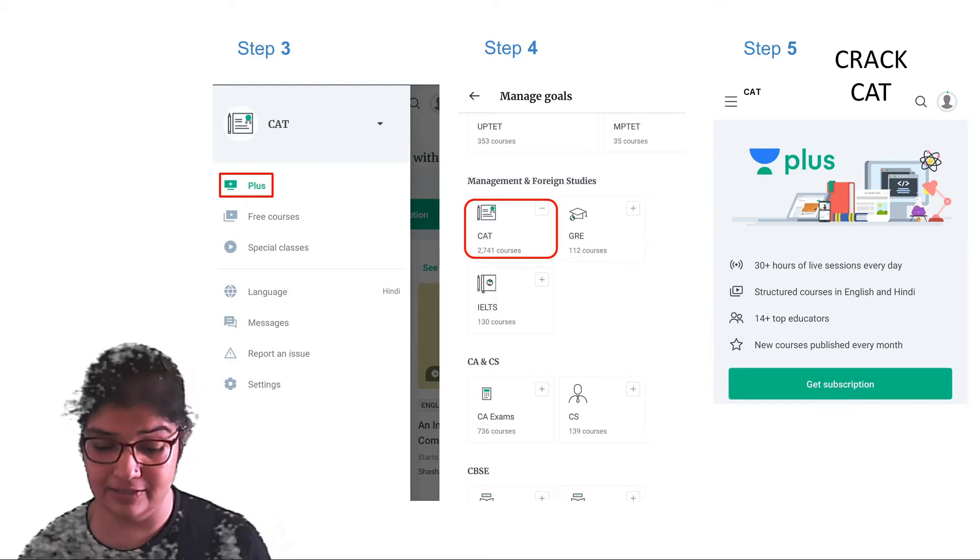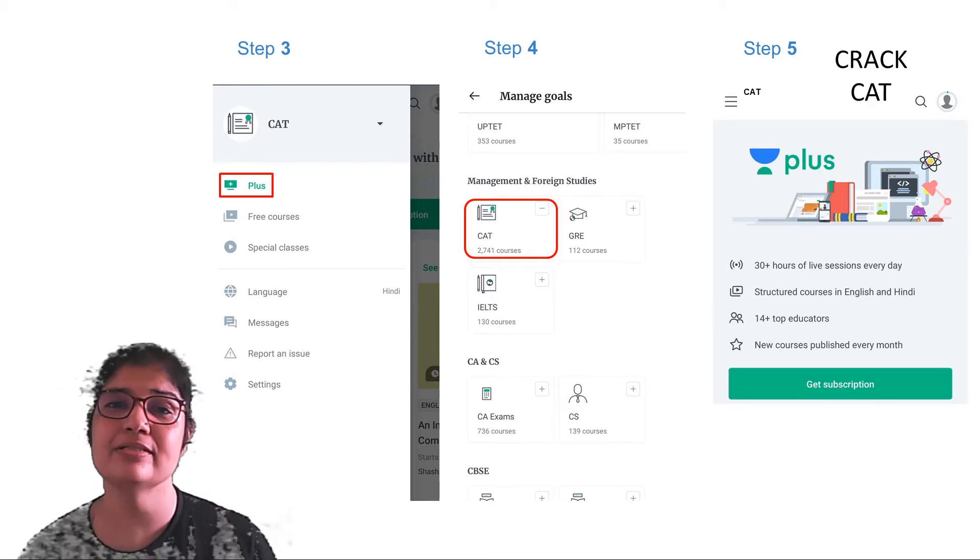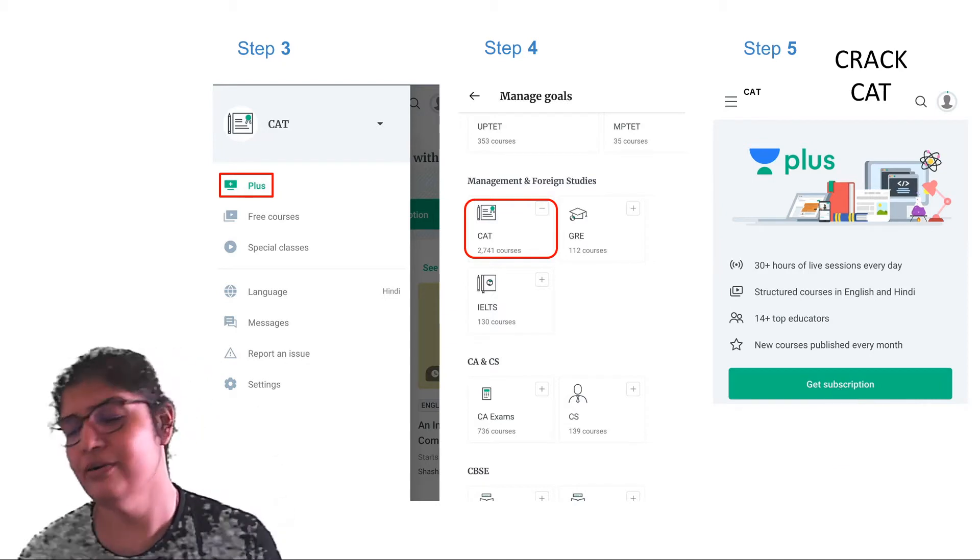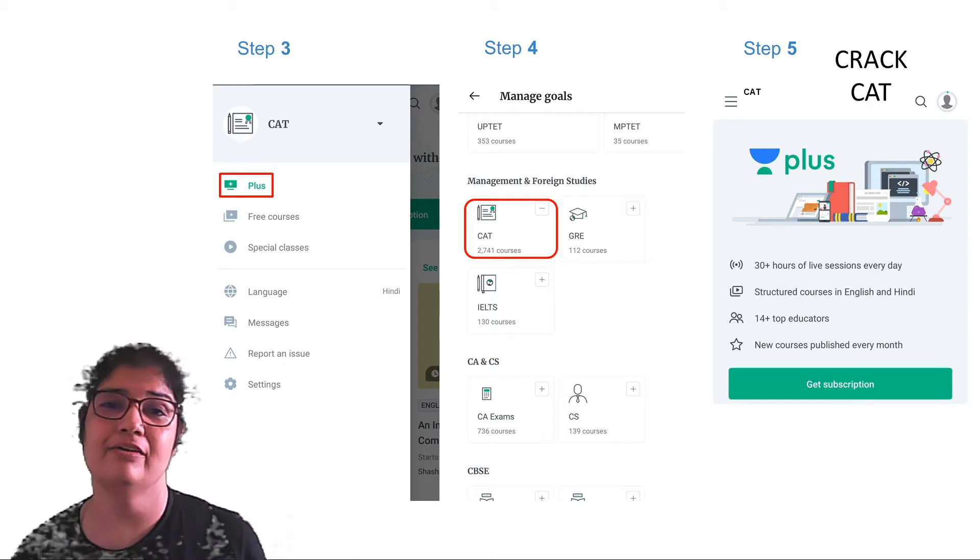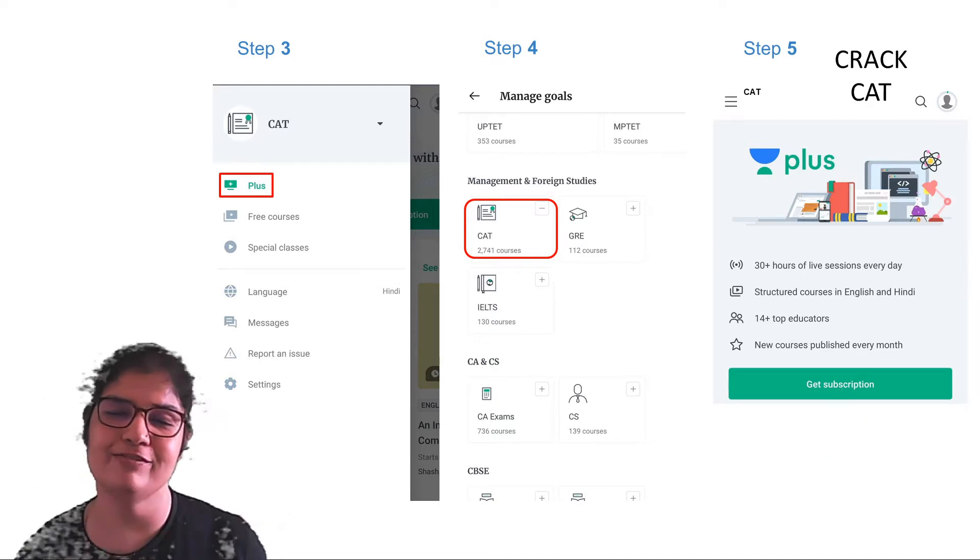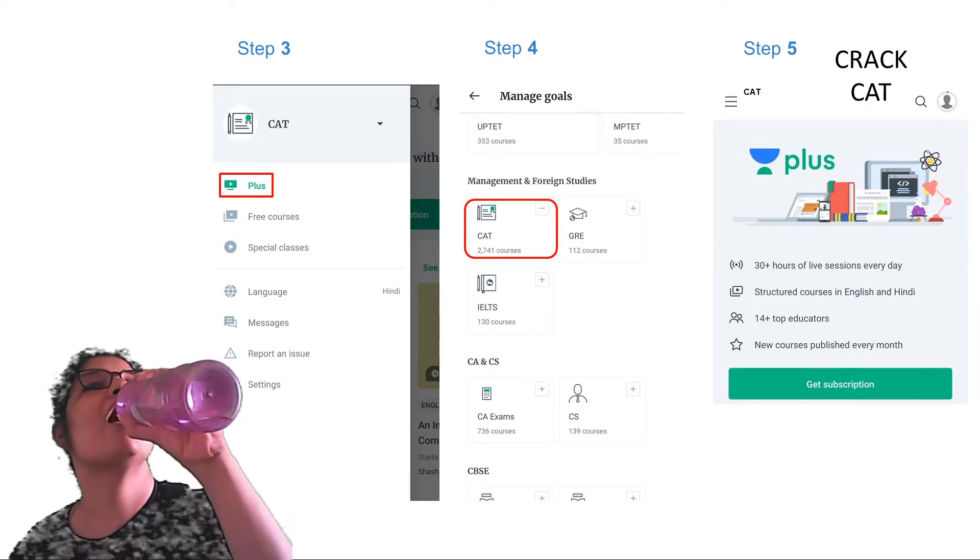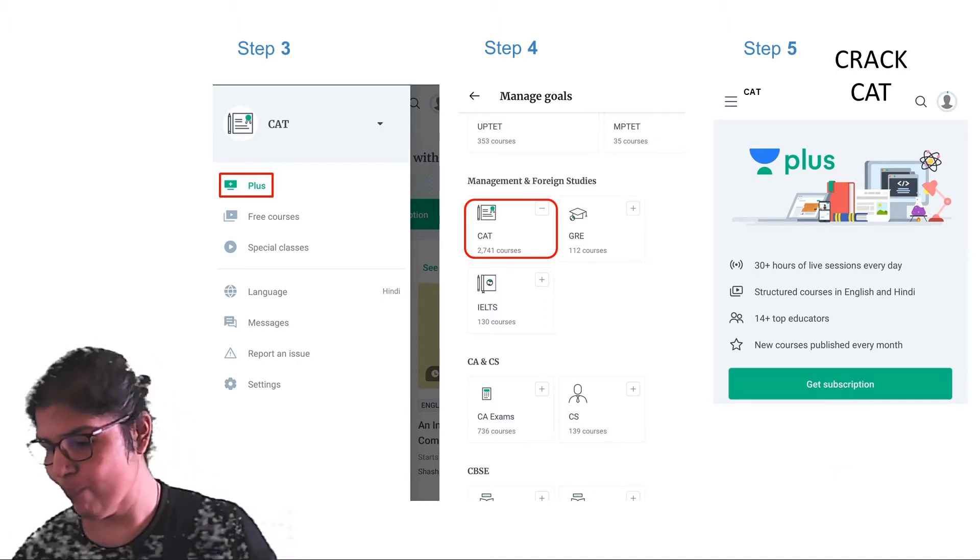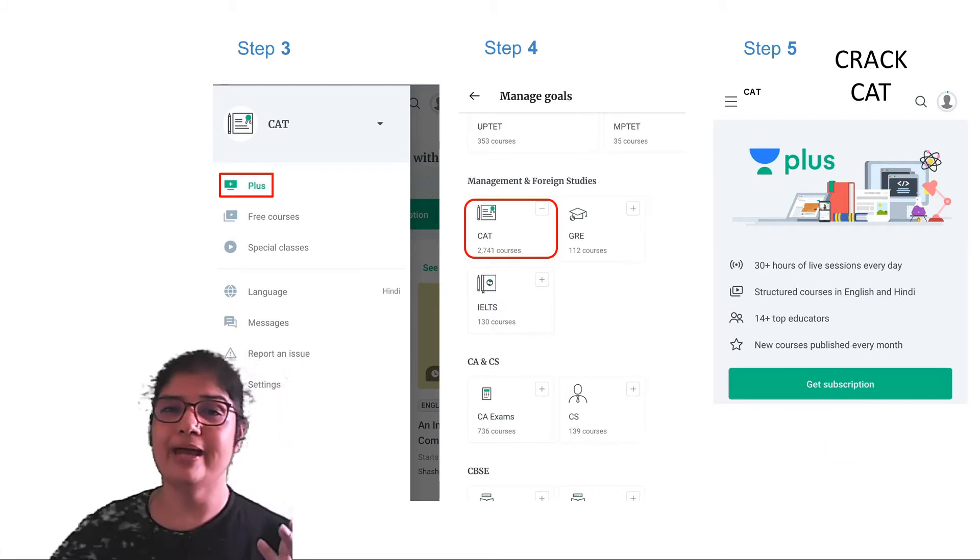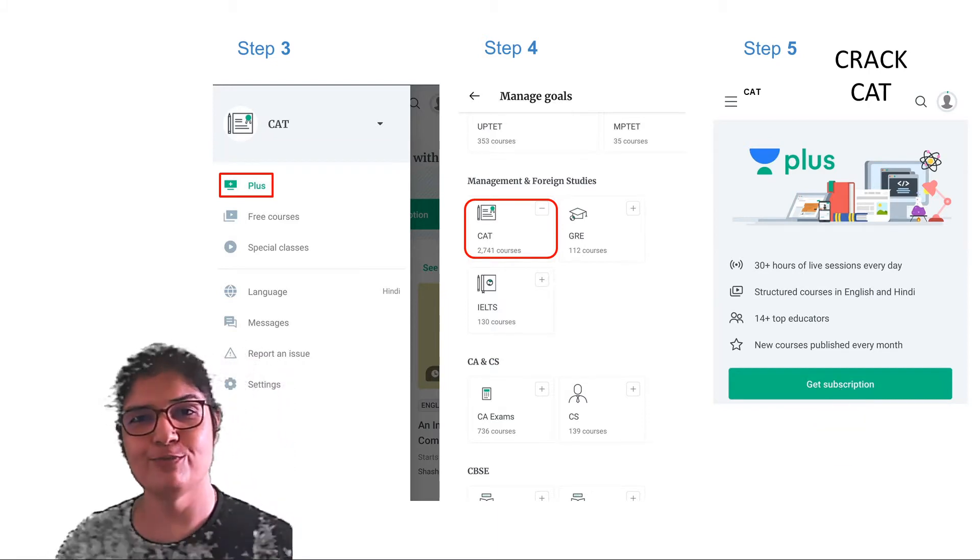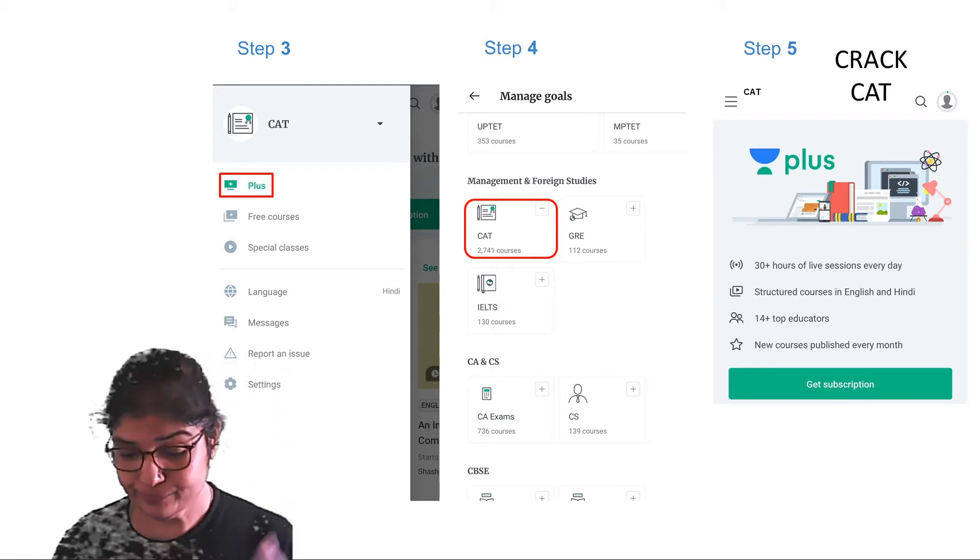Besides that, guys, another great reason you should be on the Unacademy platform is the variety, diversity that we have in our educators. We have close to 200 educators in just CAT, consisting of people right from Himachal to Chennai. So we have people from every state. And we teach in all languages. So if language is a barrier in Unacademy, there is no such barrier.